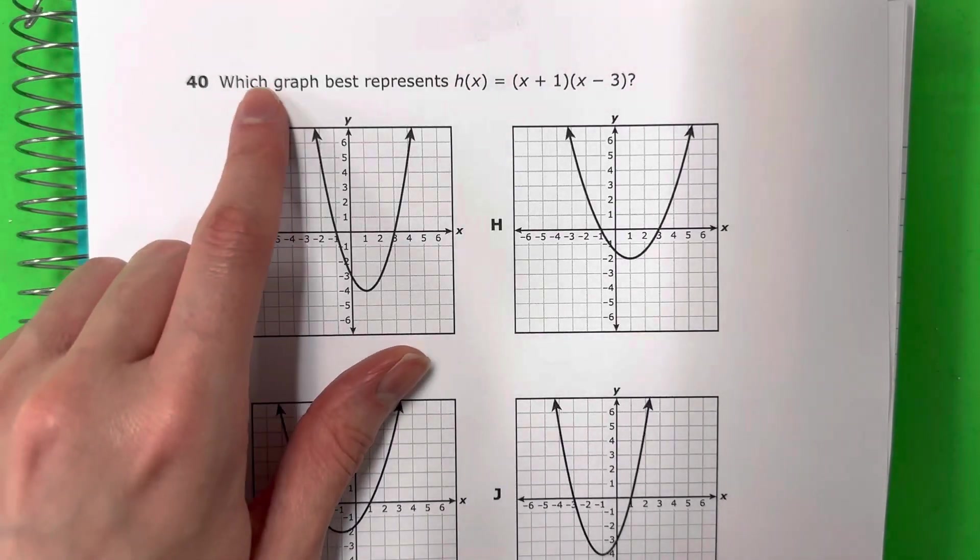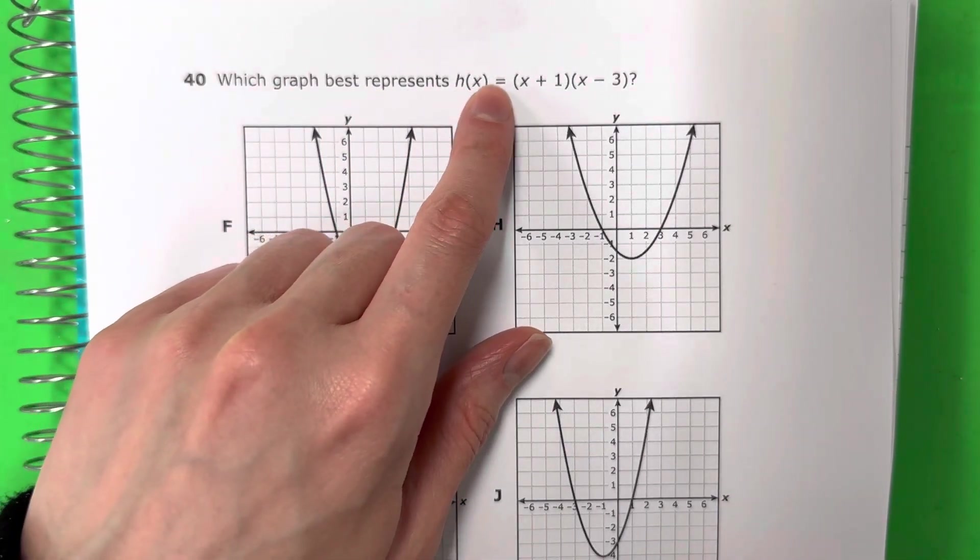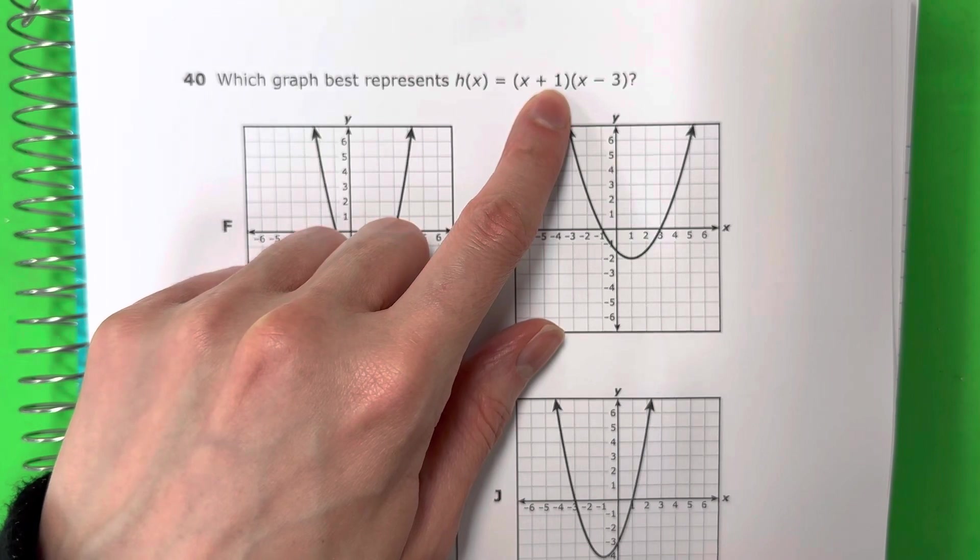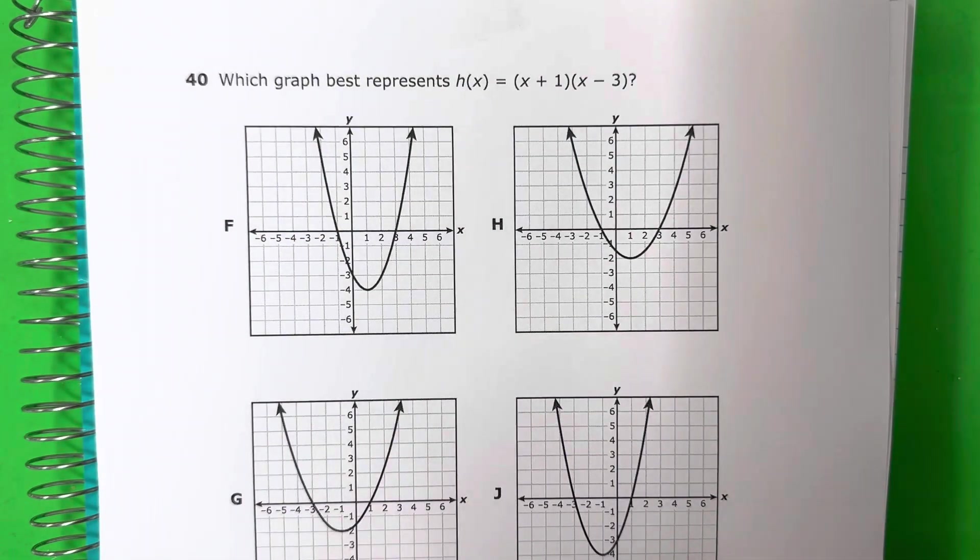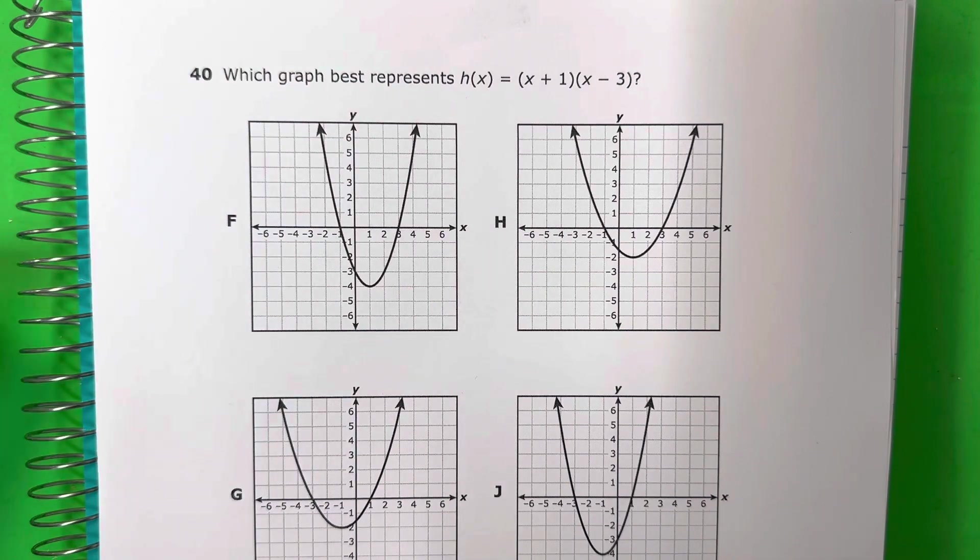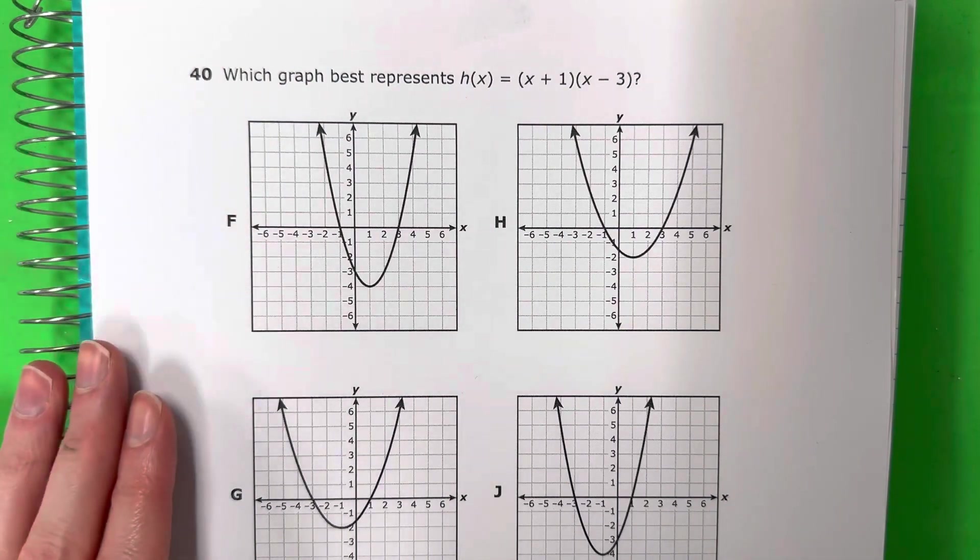Question 40. Which graph best represents h of x equals x plus 1 times x minus 3? I'm going to show you the easiest way to answer this. Voy a mostrarles la manera más fácil para contestar este.